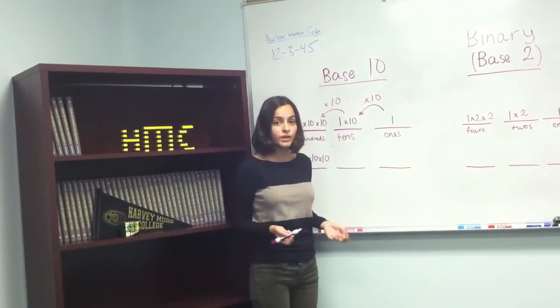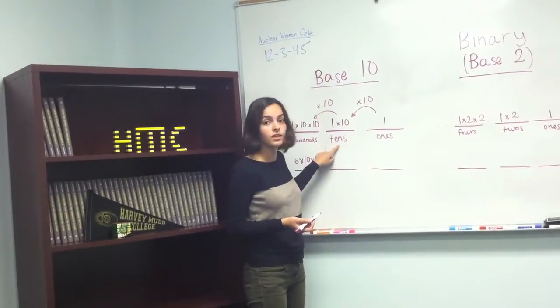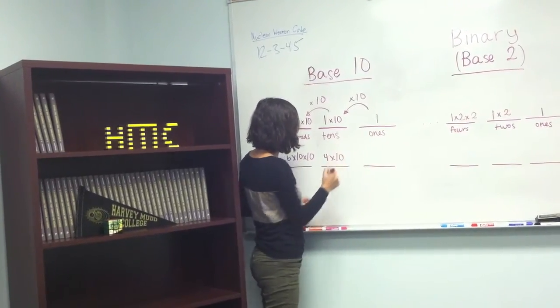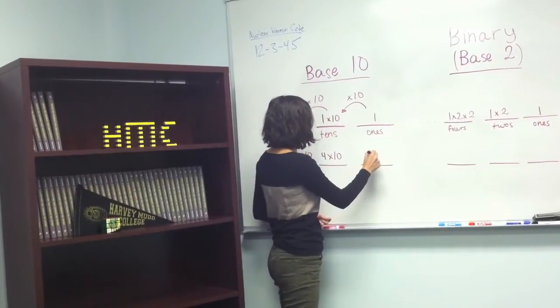Now we're left with 42, and the largest placeholder that can hold 42 is the tens place. So we take 4, and we multiply it by 10. And now all we're left with is 2, so we can just multiply that 2 by 1.